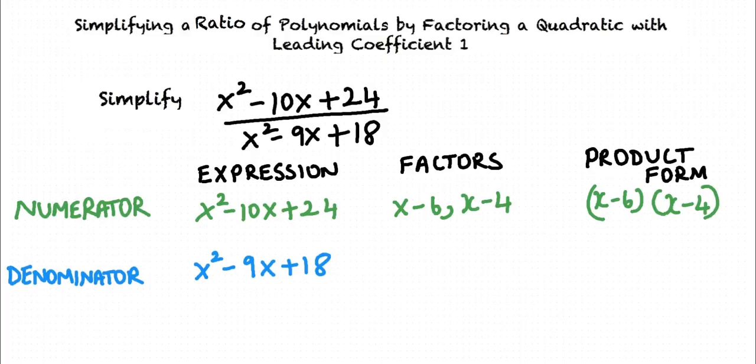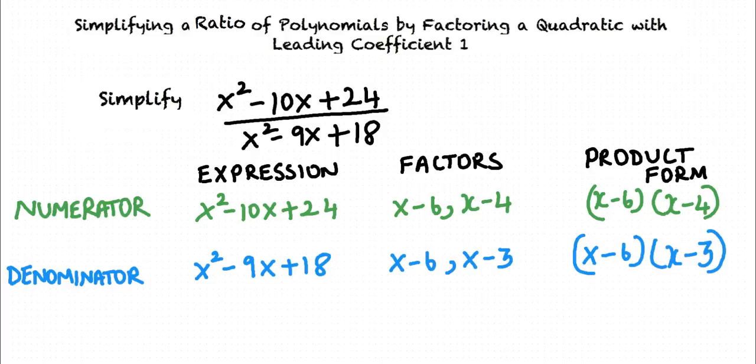Consider the denominator x² minus 9x plus 18. The factors of this expression are x minus 6 and x minus 3. Writing the denominator as a product of its factors, we get x² minus 9x plus 18 equals x minus 6 times x minus 3.